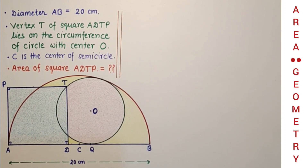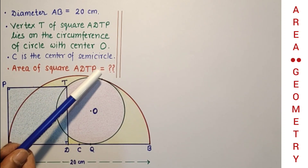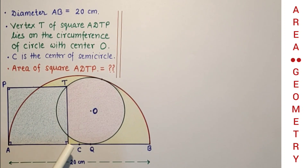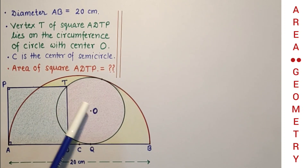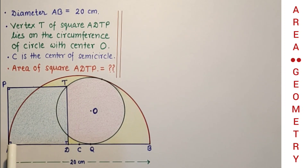Since diameter AB is 20 cm, the radius of the semicircle CB is 10 cm. From center C to the point of contact, if we join that point — let us suppose this point is S — so CS will again be 10 cm. And if we join OQ, this will be the radius of the smaller circle, and OT will also be a radius of the circle. If we join AT...